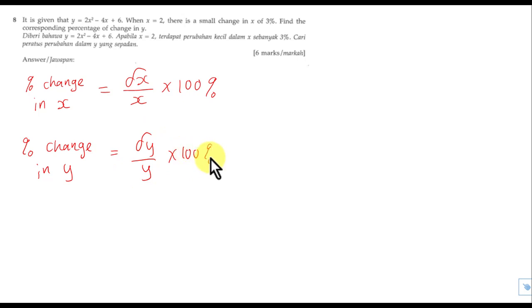Over here, let me explain what is X. X is basically the original X value. In this case, the X is 2, then you just insert the 2 over here. In this question, they give us a Y equation that tells us when X equals 2, there's a small change in X, which is 3%. So this 3% is not the change of X. It's the percentage change in X.